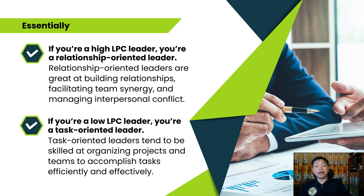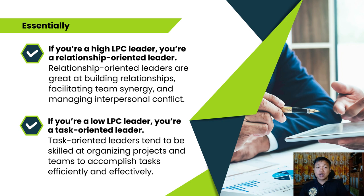If you're a high LPC leader, you're a relationship-oriented leader. Relationship-oriented leaders are great at building relationships, facilitating team synergy, and managing interpersonal conflict. If you're a low LPC leader, you're a task-oriented leader. Task-oriented leaders tend to be skilled at organizing projects and teams to accomplish tasks efficiently and effectively. Rating your least preferred coworker favorably means you see the best in people, even those you wouldn't necessarily choose to work with. Rating your least preferred coworker unfavorably suggests that you struggle to see their contribution since you value efficiency and effectiveness over other attributes.